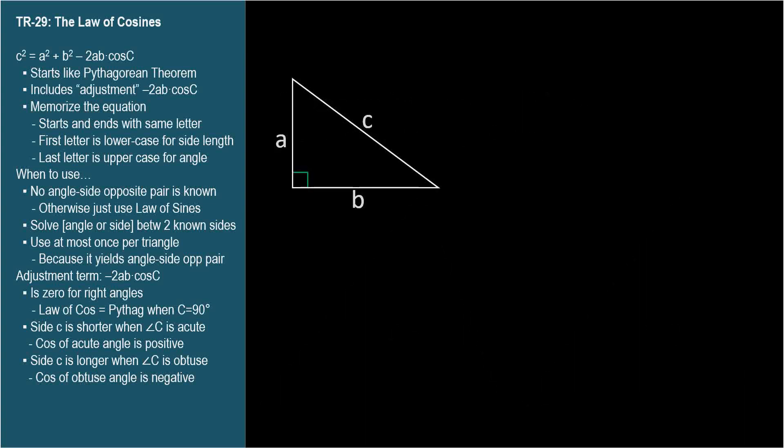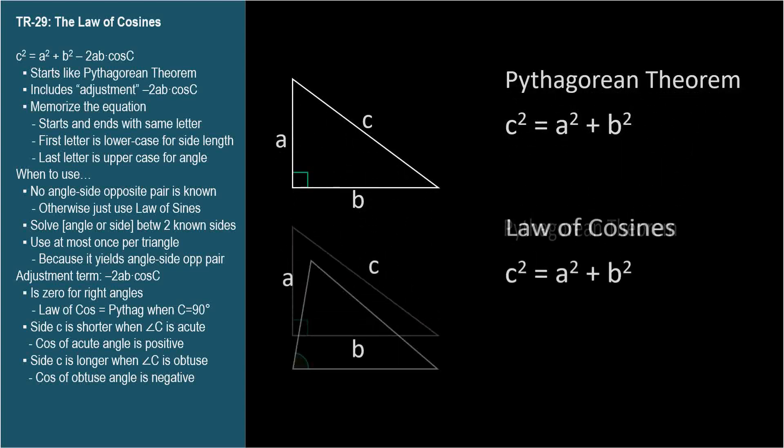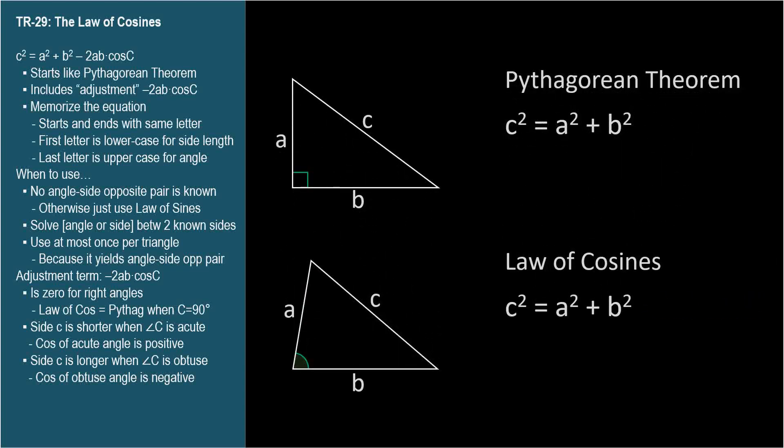The Law of Cosines is basically the Pythagorean Theorem with a little adjustment. Here's the Pythagorean Theorem, which can be applied only to right triangles. And when the triangle doesn't have a right angle, we must subtract this expression, minus 2ab cosine C.